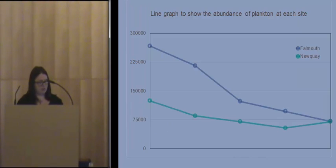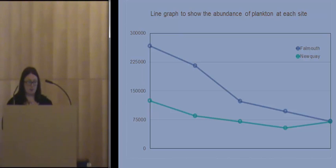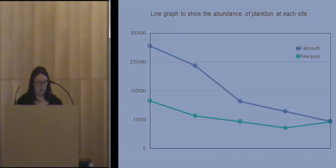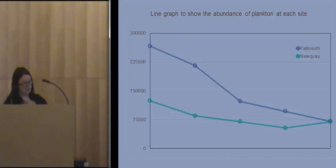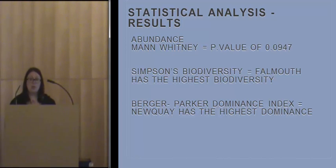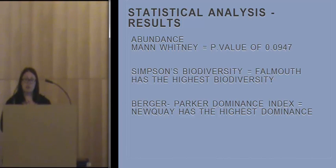The abundance of species recorded for each sample is shown on this line graph. The first recorded sample at Falmouth appears significantly higher than Newquay: the total plankton counted for the first Falmouth sample was 266,732, whereas Newquay was less than half at 124,026. Although the line graph seems to show a difference in abundance between coasts, once statistically analysed using the Mann-Whitney test, it was calculated that there was no significant difference between the abundance at each site.